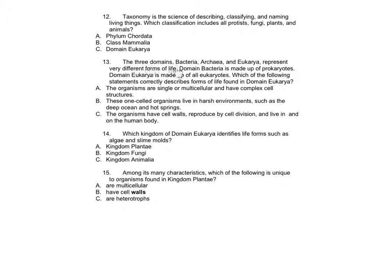Number 13: The three domains—Bacteria, Archaea, and Eukarya—represent very different forms of life. Domain Bacteria is made up of prokaryotes. Domain Eukarya is made up of all eukaryotes. Which of the following statements correctly describes the forms of life found in domain Eukarya?